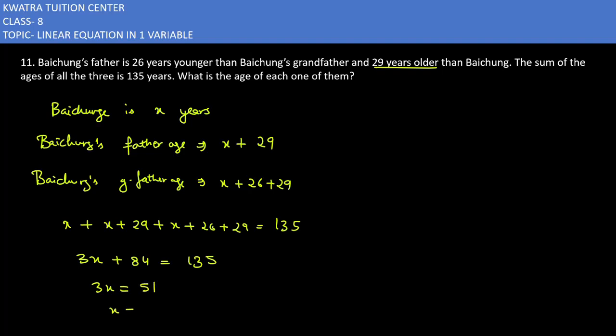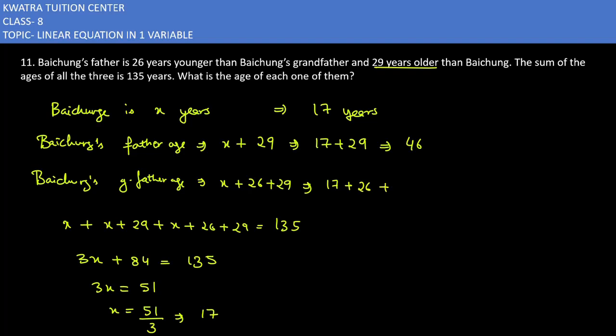The value comes to 51 over 3, which is 17, so X equals 17. Baichung's age is 17 years, Baichung's father's age is 17 plus 29 which is 46, and Baichung's grandfather's age is 17 plus 26 plus 29 which is 72 years. So the age of each one of them is 17, 46, and 72 respectively. This is the answer for the 11th one.